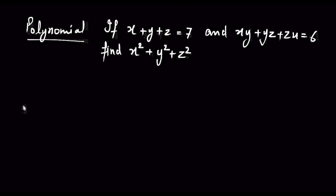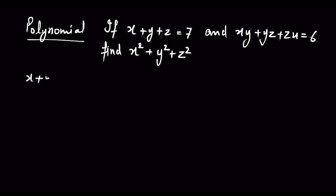Hello students, today we are going to solve some important questions of Polynomial Class 9. The question is: if x plus y plus z is 7, and xy plus yz plus zx equals 6, find the value of x square plus y square plus z square. आपको मालूम है 9th में यह एक identity है: x plus y plus z whole square।